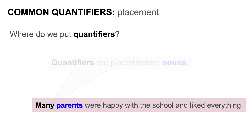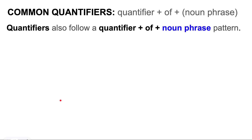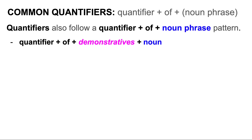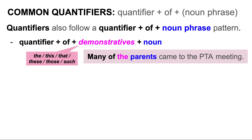Where do we put quantifiers? Quantifiers are placed before nouns. For example, 'many parents were happy with the school' — many is the quantifier, parents is the noun. Quantifiers also follow a quantifier-plus-of-plus-noun-phrase pattern. For example, we can use a quantifier plus of plus demonstratives plus noun. Demonstratives are words such as the, this, that, these, those, and such. Sample sentence: Many of the parents came to the PTA meeting.